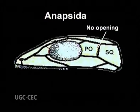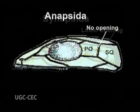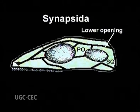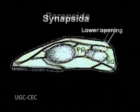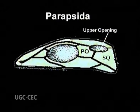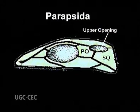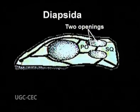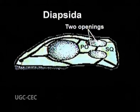The four skull types are: Anapsida — no opening; Synapsida — a lower opening with postorbital and squamosal meeting above it; Parapsida — an upper opening with postorbital and squamosal meeting below it; and Diapsida — two openings separated by a bar.